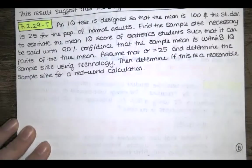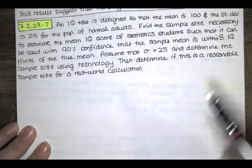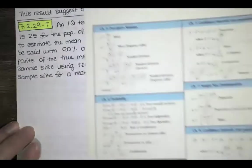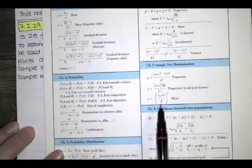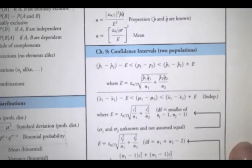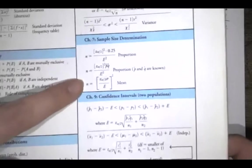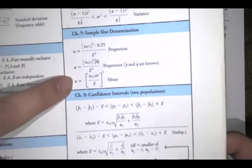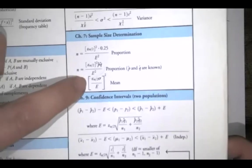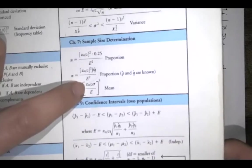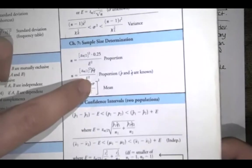Whenever we're asked to determine a sample size, we need to use a formula that we derived in our lectures. Here's the sample size for the mean. The sample size is equal to Z sub alpha over 2, and that depends on the confidence level, times the population standard deviation, all divided by the error that we're seeking, and we want all of that squared.